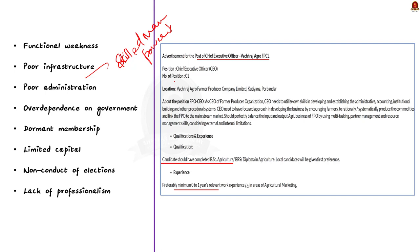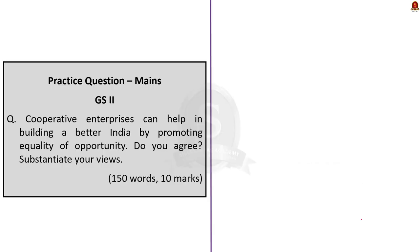These are all the important points to remember about cooperative societies. In this discussion we covered cooperative societies, the advantages of having them and the issues they currently face. Now let us move on to the next news article discussion.